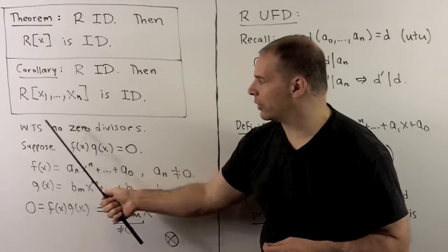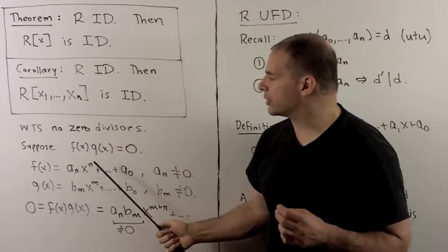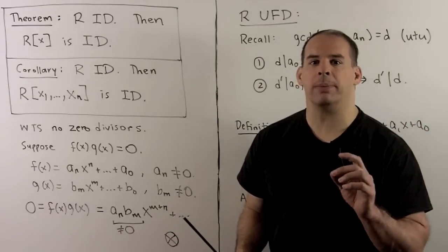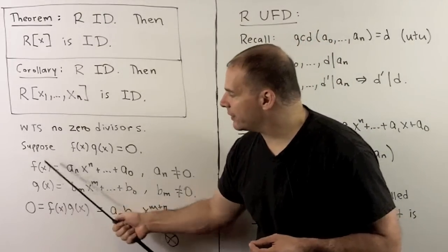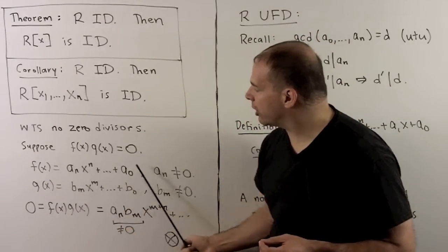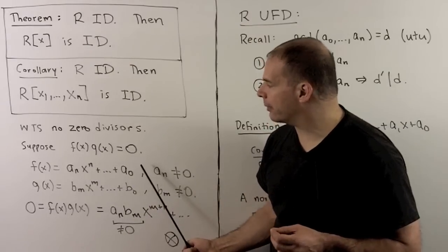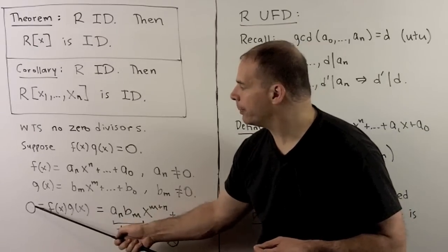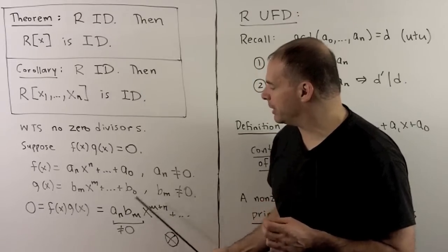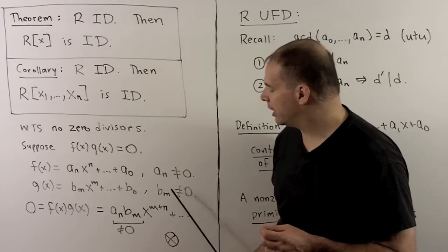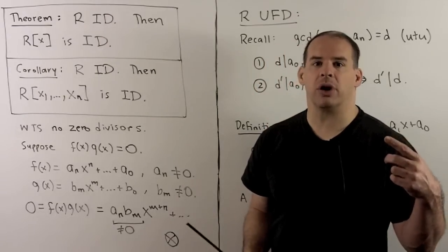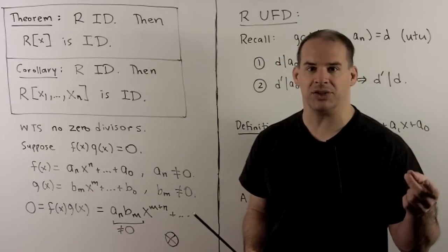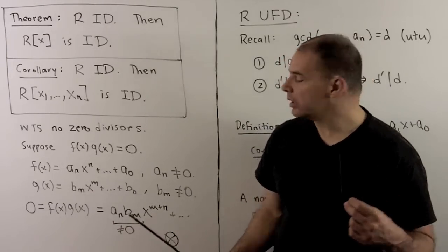For the theorem, we just want to show there are no zero divisors in the polynomial ring. So I'll take two polynomials f and g, multiply them together, and set it equal to zero. We'll assume f and g are non-zero and arrive at a contradiction. If f and g are non-zero, then at least one term's coefficient must be non-zero when we expand. Assuming we have leading terms aₙ and bₘ non-zero, when we compute the product we'll have a leading term aₙbₘ·x^(m+n). If this is equal to zero, then all coefficients are zero, meaning aₙ·bₘ = 0. But that means aₙ and bₘ are zero divisors — contradicting the fact that R is an integral domain. So that gives our result.